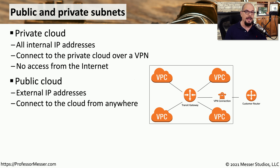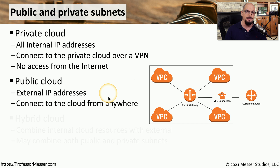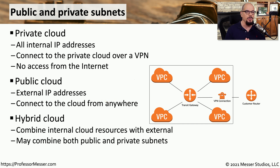Of course, you might be building an application that you want everyone in the world to access. In that case, you would use a public cloud with external IP addresses so that no matter where you are in the world, everyone can connect to your service. It's not unusual to have a public-facing part of your application that users connect to, while the internals of your application communicate with each other only over private networks. This lets you determine exactly which parts of your cloud-based services are accessible from the internet and which parts are private to your organization.